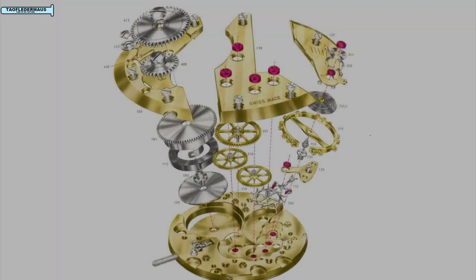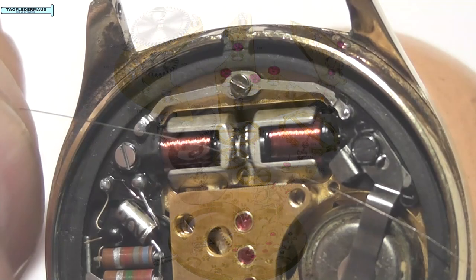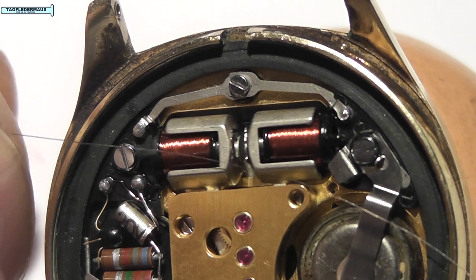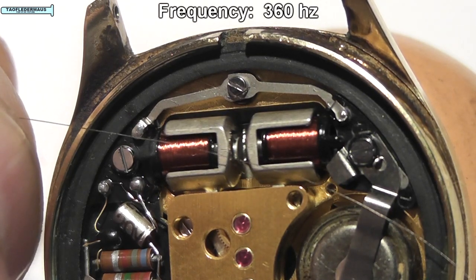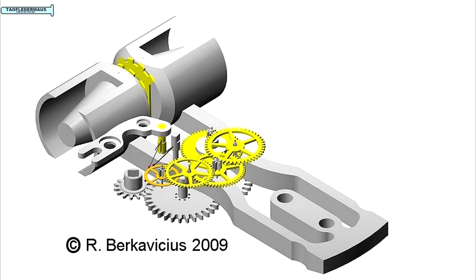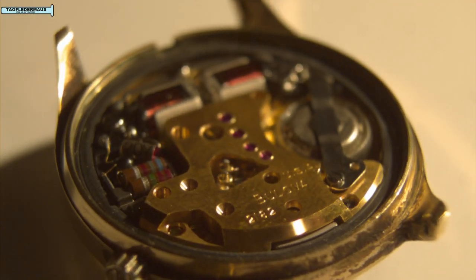Now a normal watch uses what's called a balance wheel which is kind of like a pendulum to regulate the time. But the Accutron uses an electrically powered tuning fork to regulate the time. This not only gave the watch a very distinctive sound but it also reduced the number of moving parts in the watch. This was one of the most radical changes to how watches were made in over 300 years.